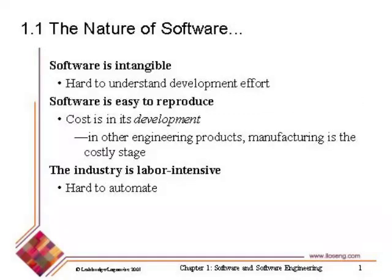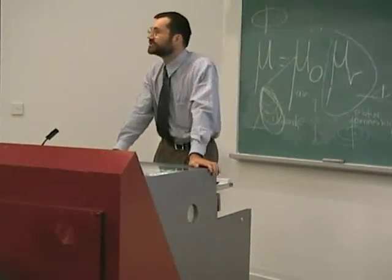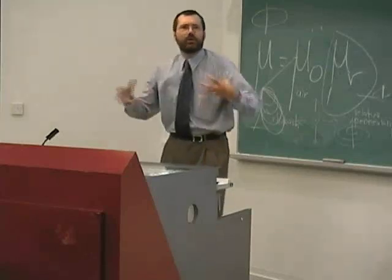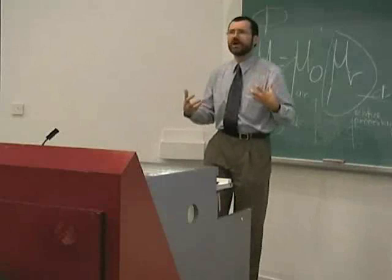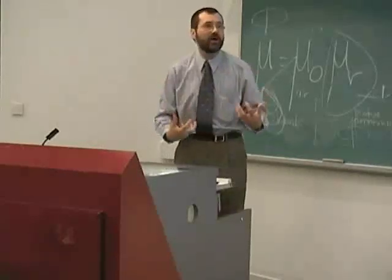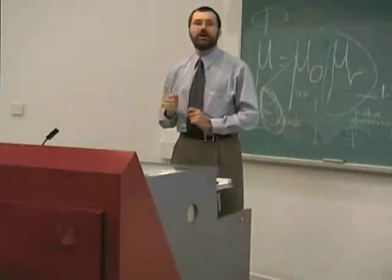We're going to start chapter one. The first thing we want to talk about is what is software. One of the prerequisites for this course is that you have some experience developing programs. You will have taken CSI-1102, which is the second course in programming, and learned how to develop basic Java programs. However, we want to talk about more abstract issues about what software really is, to contrast it with what other engineers produce. Fundamentally, this course is about being a software engineer, not just a programmer — programming is a key part, but we'll go way beyond it.